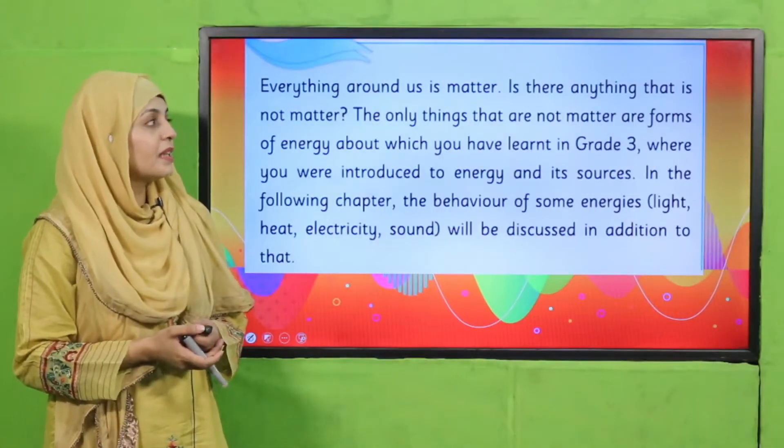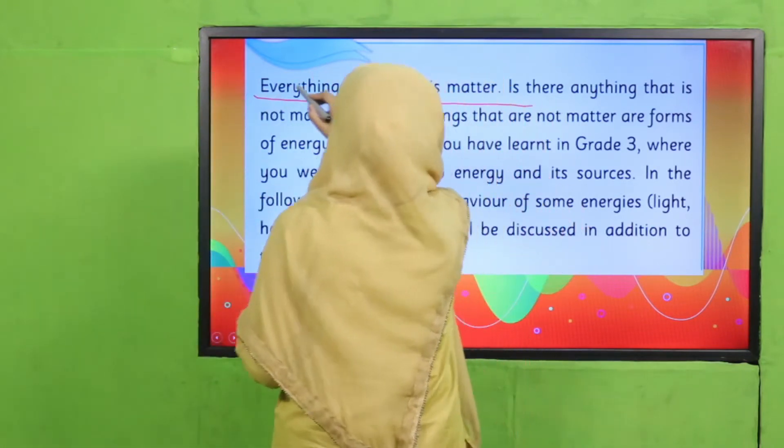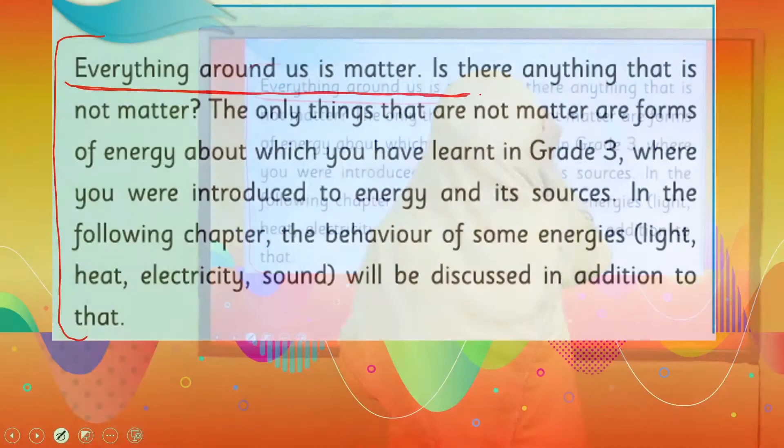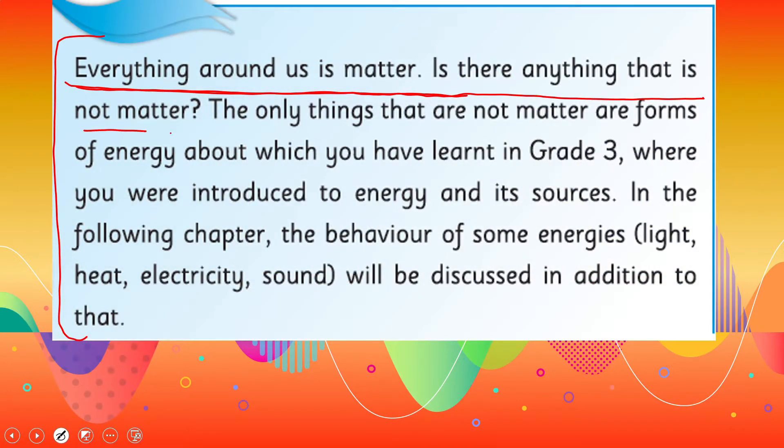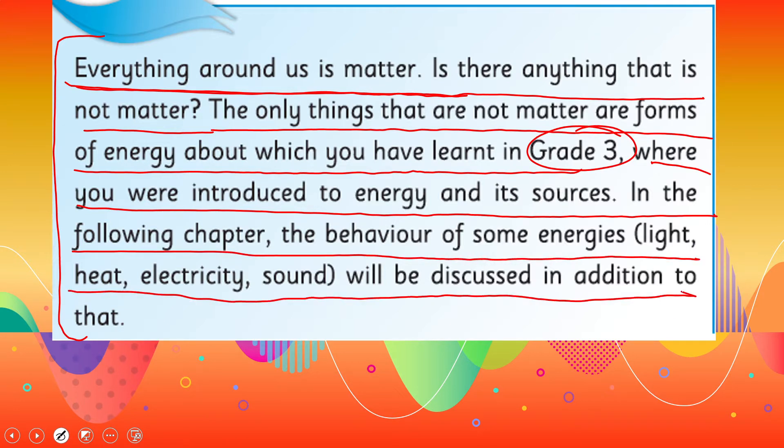My dear students, in this unit, everything around us is matter. This is the introduction of chapter number five. Everything around us is matter. Is there anything that is not matter? The only things that are not matter are forms of energy, about which you have learned in grade three, where you were introduced to energy and its sources. In the following chapter, the behavior of some energies—light, heat, electricity, sound—will be discussed in addition to that.